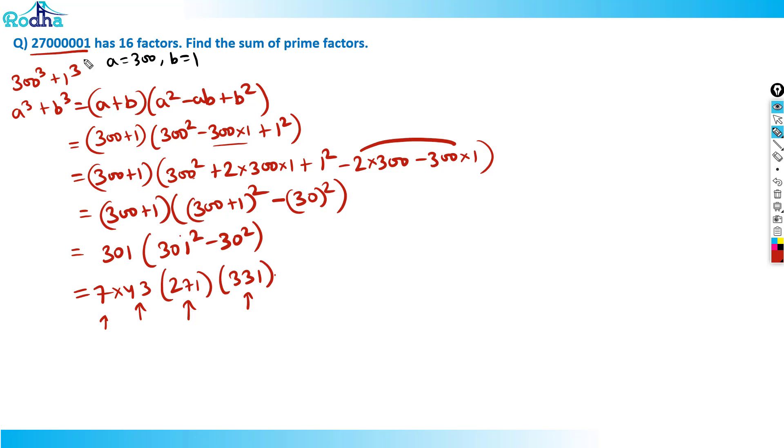Finally, I can write this big number as 7 into 43 into 271 into 331. What is the value? I wanted sum of prime factors. These are the four prime factors. What is their sum? 331 plus 271 is 602 plus 50 is 652. So 652 is the answer.